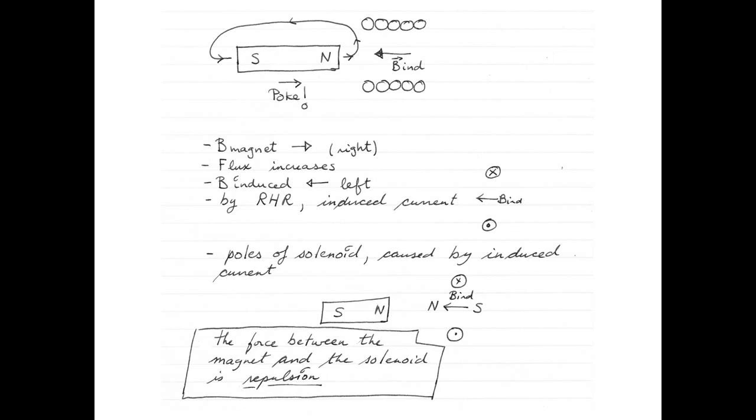And since it is the north pole of the magnet that is going into the solenoid, north and north repelling each other means that the magnet and the solenoid are repelling each other. There we go!